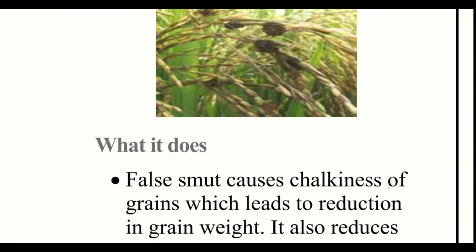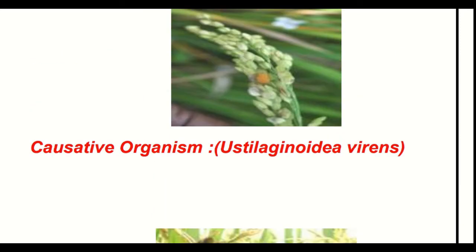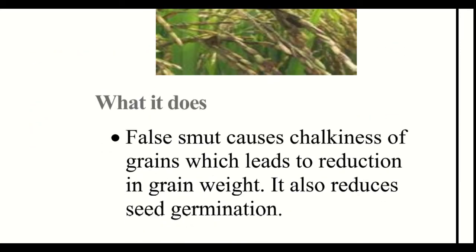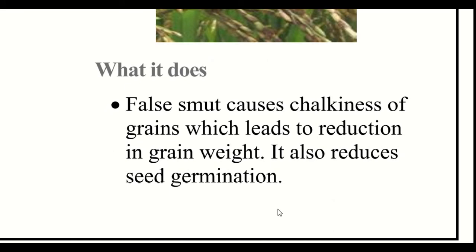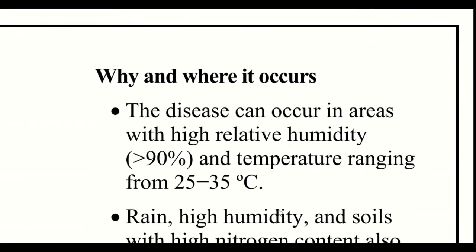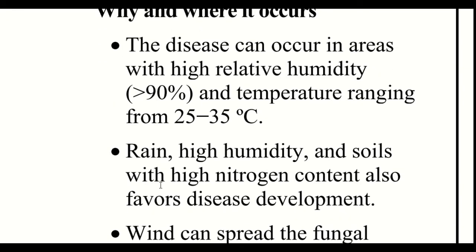False Smut causes the chalkiness of grains, which leads to reduction in grain weight, and it also reduces seed germination. The disease can occur in areas with high relative humidity greater than 90% and temperature ranging from 25 to 35 degrees Celsius. Rain, high humidity, and soil with high nitrogen content also favor disease development.